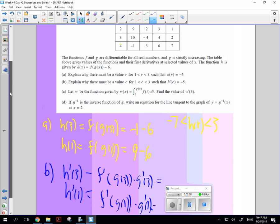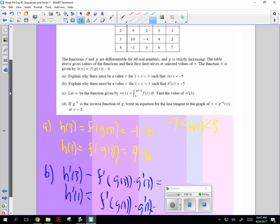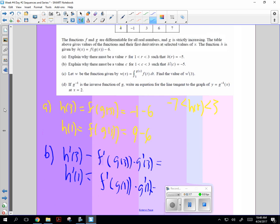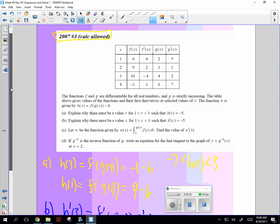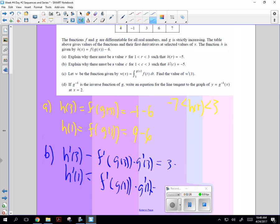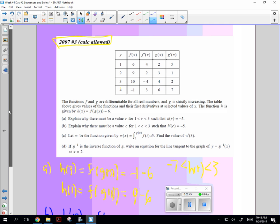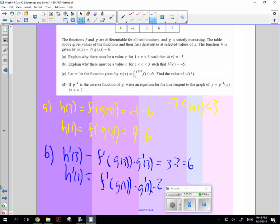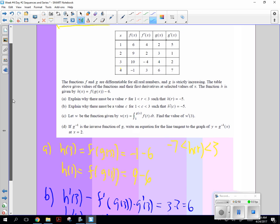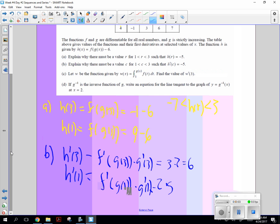Same with this one. f prime of g of 1 times g prime of 1. So let's do it. Looking at the chart, g of 3 is 4. Then f prime of 4 is 3. So this is going to be 3 times g prime of 3 is 2, which is going to give me 6. By the way, what happened to this negative 6 when I took the derivative? 0. So we're fine with that. g of 1 is 2, f prime of 2 is 2. So this is going to be 2 times g prime of 1. g prime of 1 is 5. So this is going to be equal to... I got 6. I got, what is that, 10?